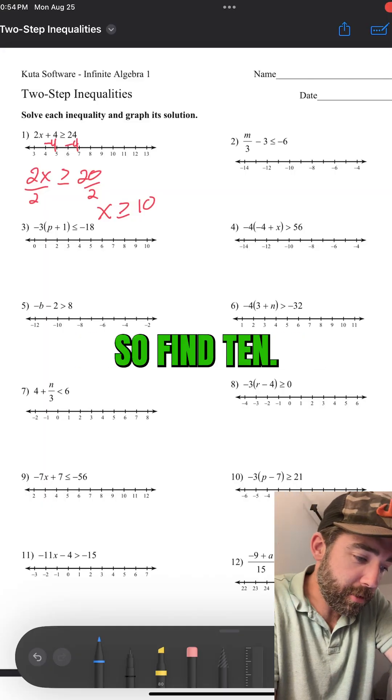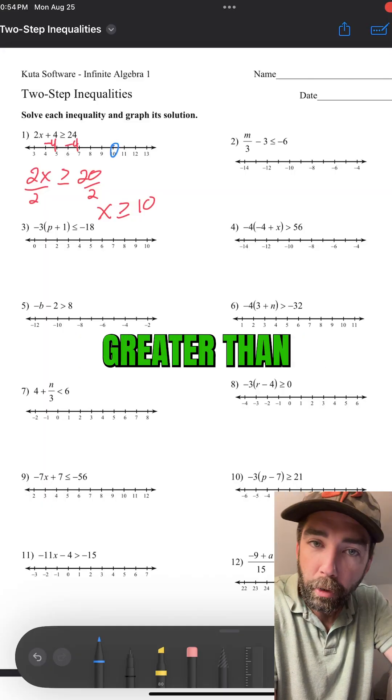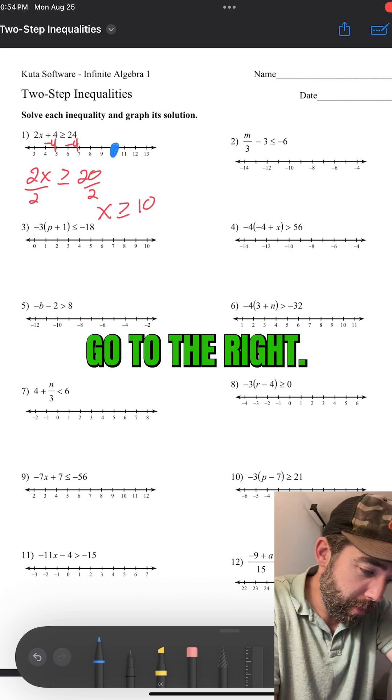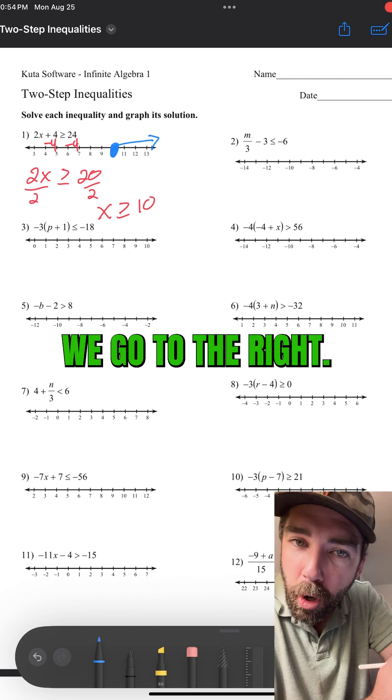Now, graph it. x is greater than or equal to 10. So, find 10. Circle it. Greater than. Equal to. Fill it in. Greater than says, go to the right. So, boom. We go to the right.